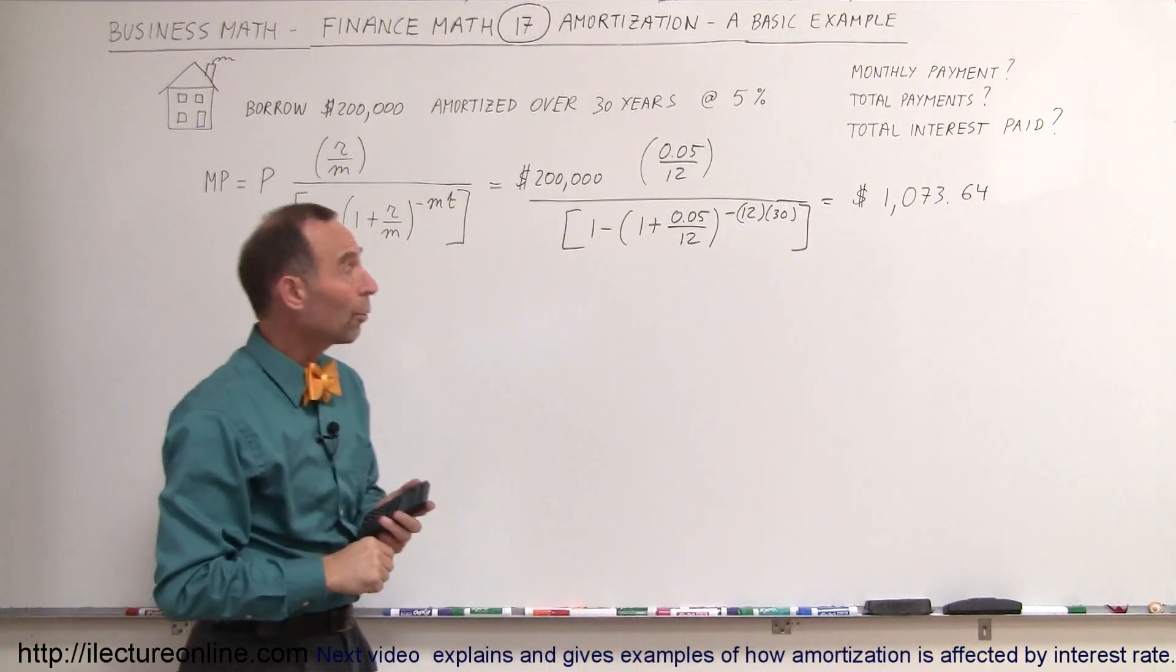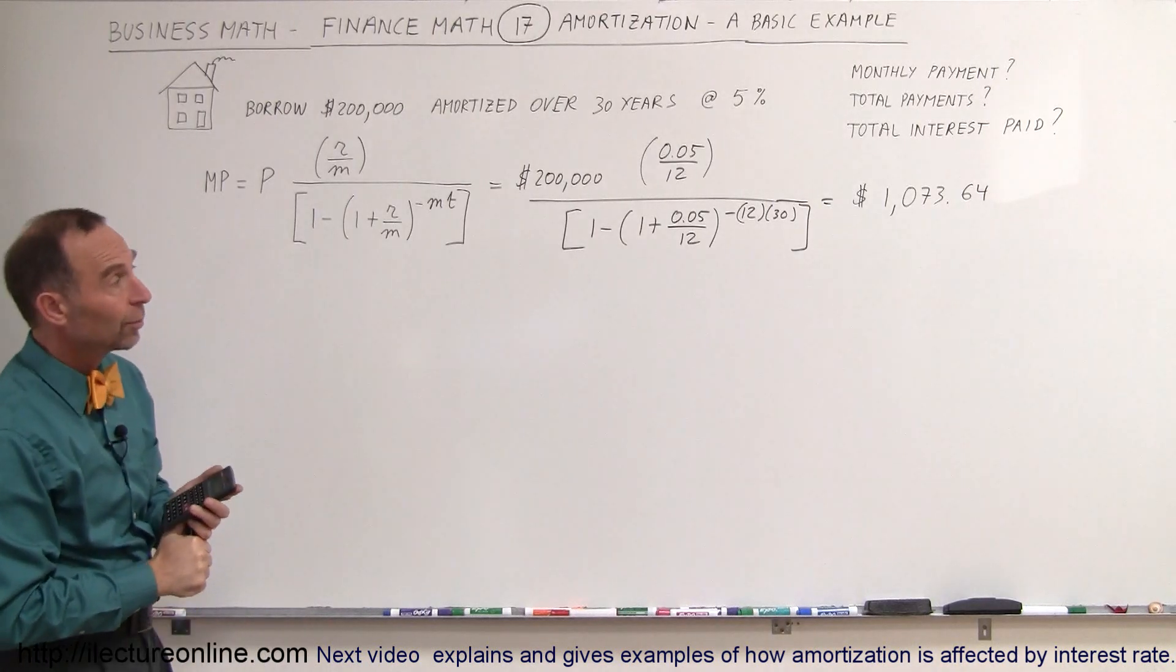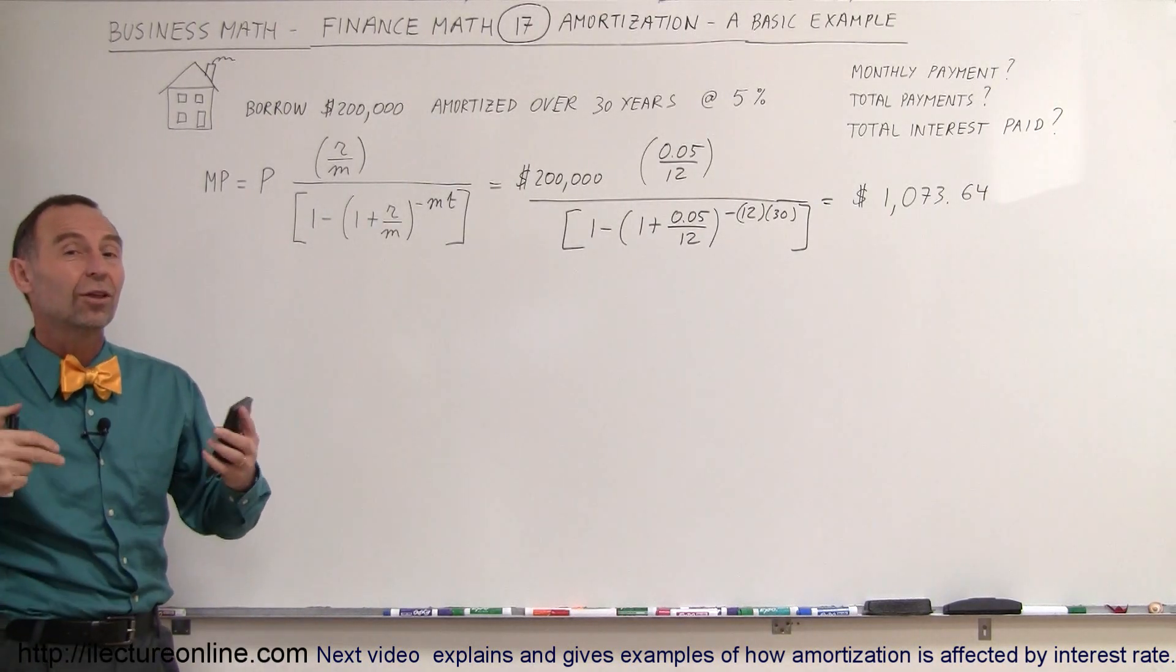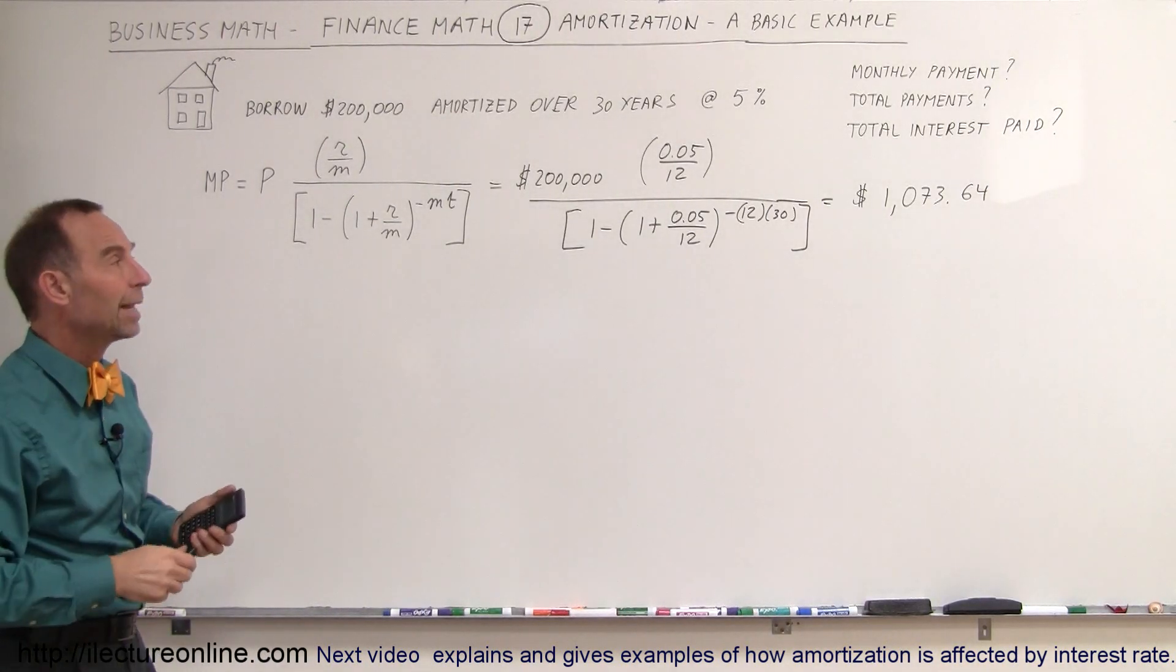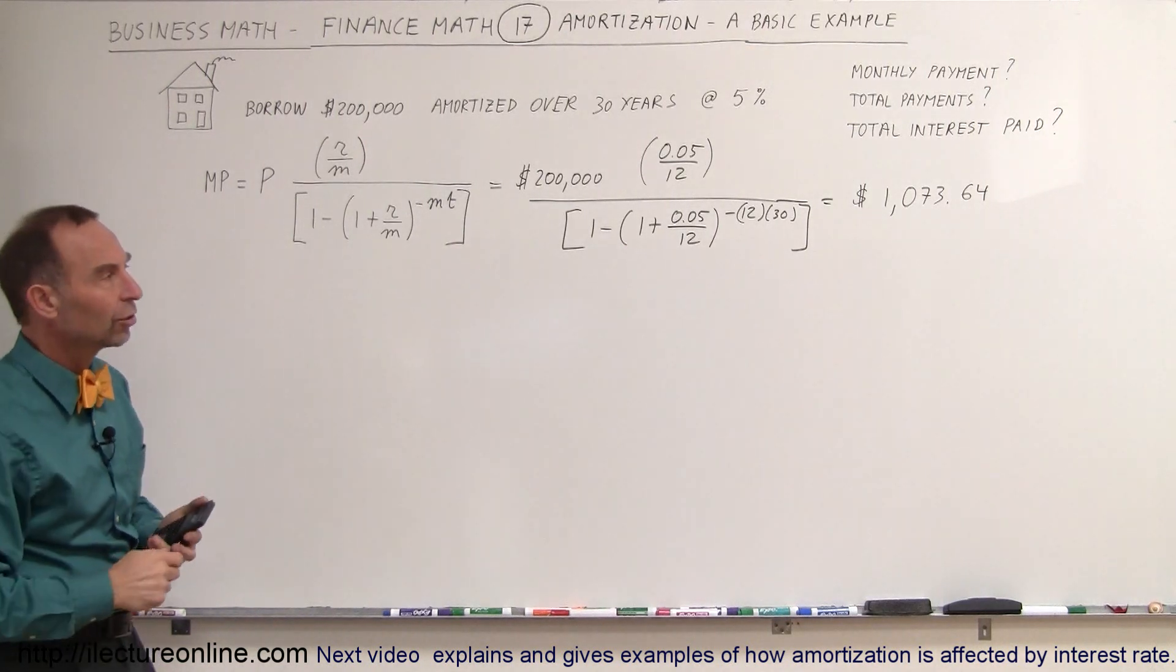All right, so the bank then will require you to pay $1,073.64 for the next 30 years, and then the whole loan will be paid off. That's what we call an amortization loan.